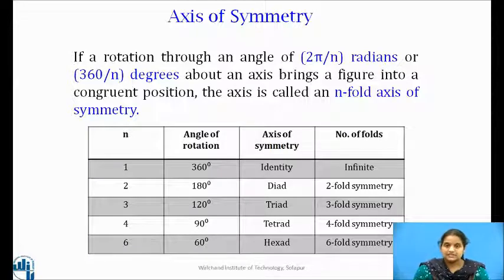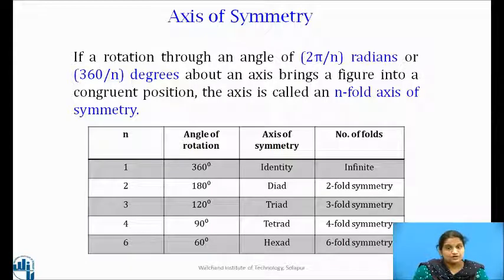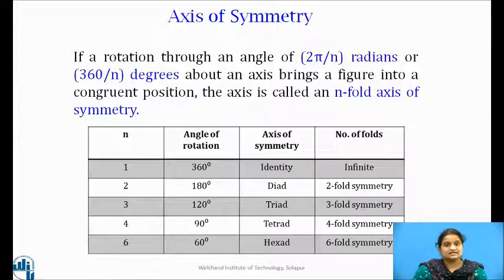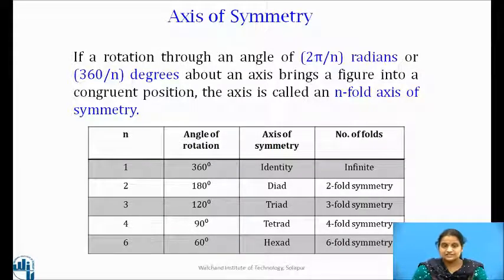As discussed earlier, it is found that crystalline solids show only 1, 2, 3, 4, and 6-fold symmetry. They do not show 5-fold or any symmetry axis higher than 6. The reason for this is that a crystal is not just a solid body but one in which atoms and molecules are internally arranged in a very regular and periodic fashion in a 3-dimensional pattern. Consequently, identical repetition of a unit can take place only when we consider 1, 2, 3, 4, and 6-fold axes.